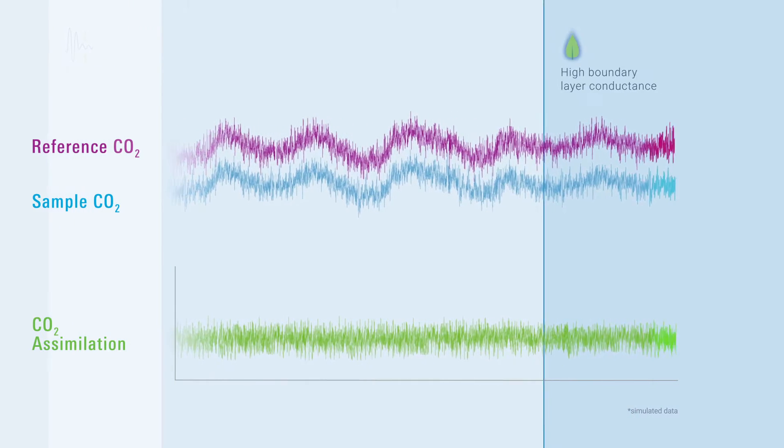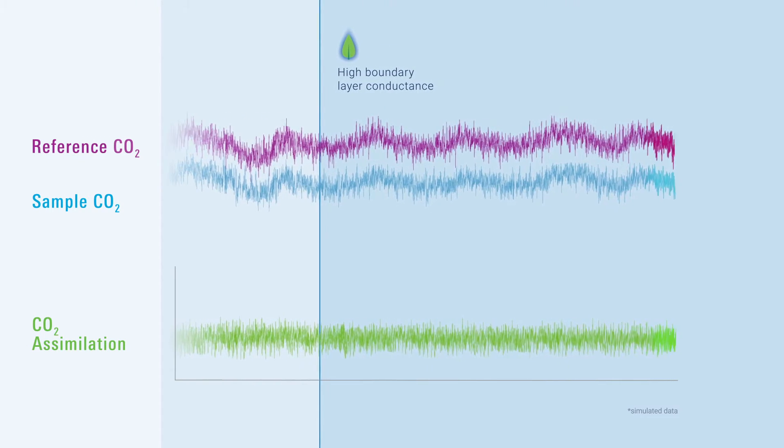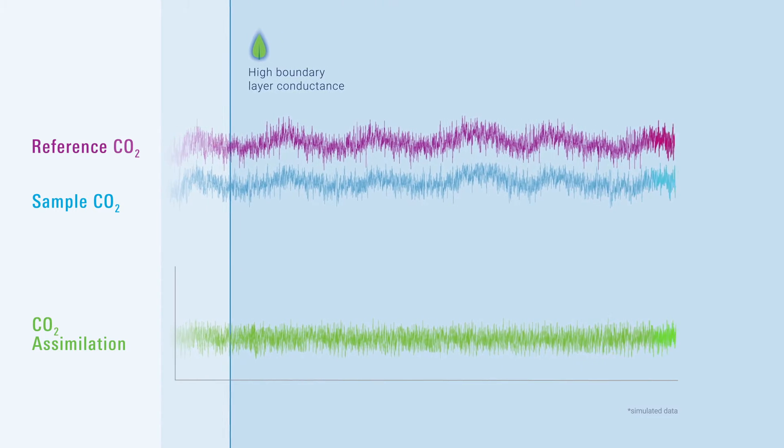The leaf chamber mixing fan reduces the leaf boundary layer thickness to minimize boundary layer resistance, which closely couples the leaf and chamber conditions.